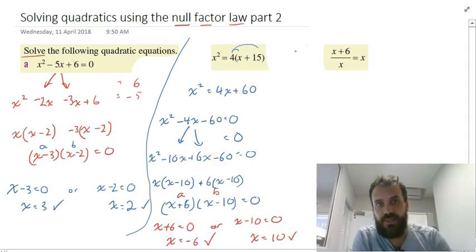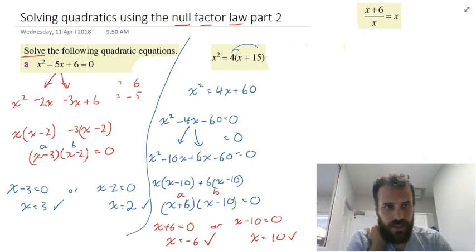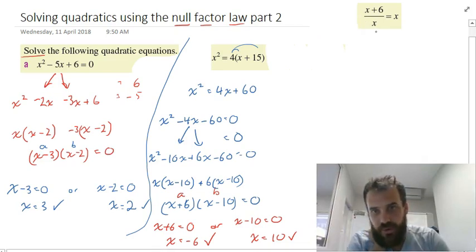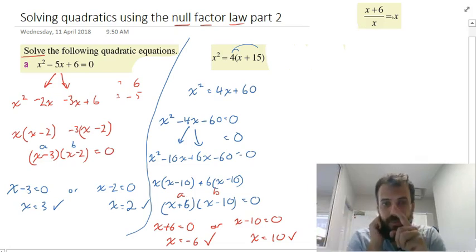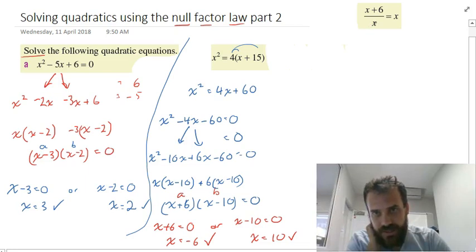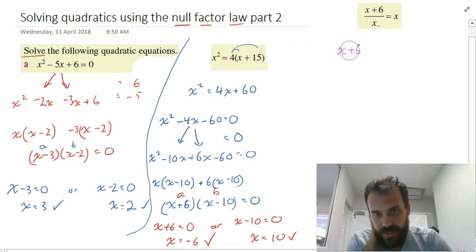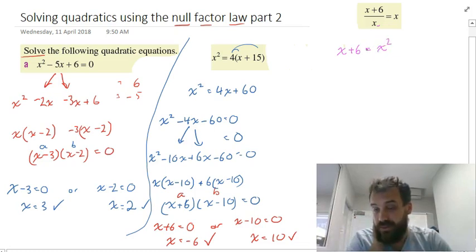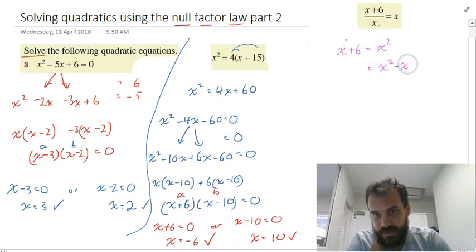And this last one: x plus 6 over x equals x. If I multiply both sides by x, that x is going to cancel out on the left side, and this x is going to become x squared. So I'm going to end up with x plus 6 equals x squared. You can see it's starting to look like a quadratic. x squared minus x minus 6 equals 0.